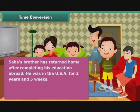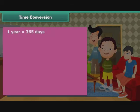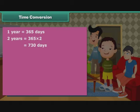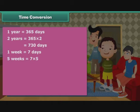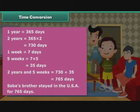Sabah's brother has returned home after completing his education abroad. He was in the USA for 2 years and 5 weeks. Express Sabah's brother's stay in the USA in days. 1 year is equal to 365 days, so 2 years is equal to 365 into 2, which equals 730 days. 1 week is equal to 7 days, so 5 weeks is equal to 7 into 5, which equals 35 days. 2 years and 5 weeks is equal to 730 plus 35, which equals 765 days. Sabah's brother stayed in the USA for 765 days.